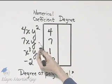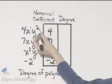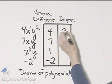It's the sum of the exponents on the variable. There's an understood 1 here, so 2 plus 1, the degree is 3.